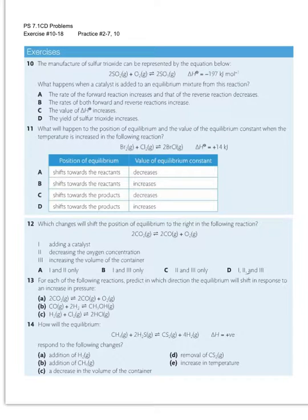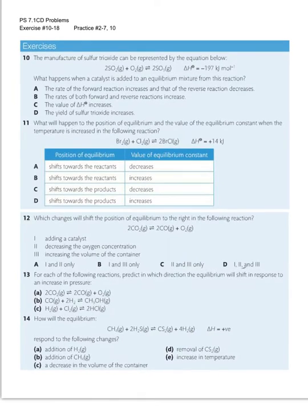It can be represented by the equation below, and they want to know what happens when a catalyst is added to an equilibrium mixture from this reaction. A says the rate of the forward reaction increases and the rate of the reverse reaction decreases. That's not true, because they both increase. B says the rate of both forward and reverse reactions increase. That's true.